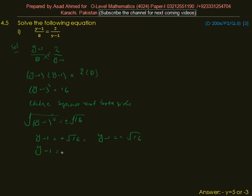y minus 1 is equal to 4, and y minus 1 is equal to minus 4 plus 1. So y is equal to 3 and y is equal to minus 3.